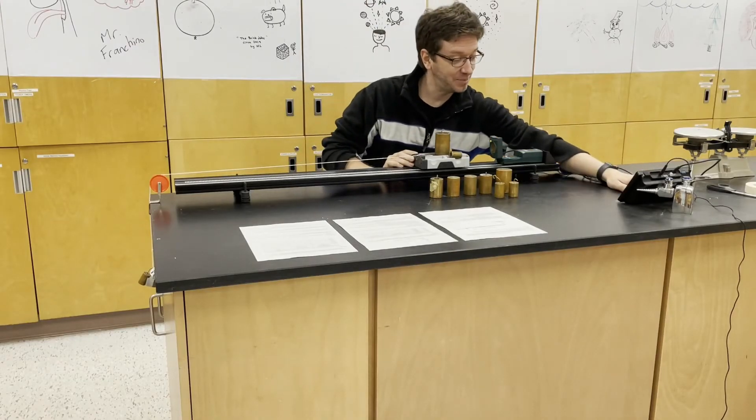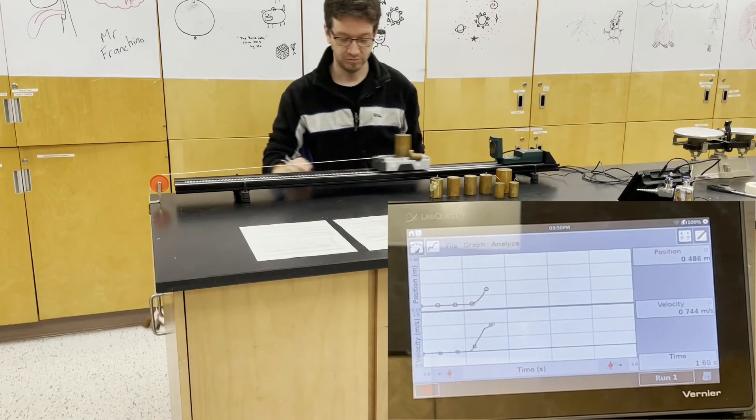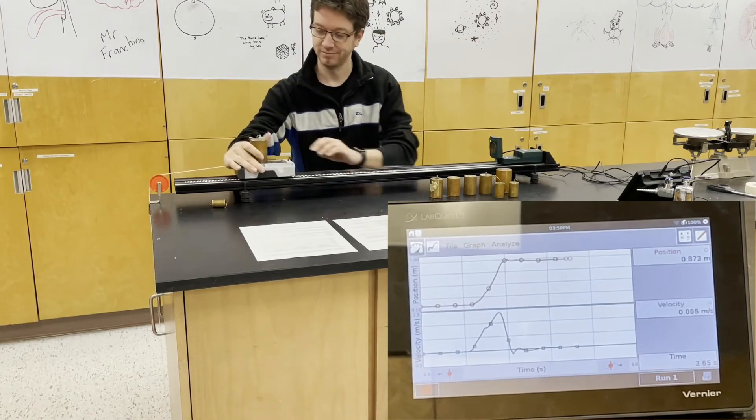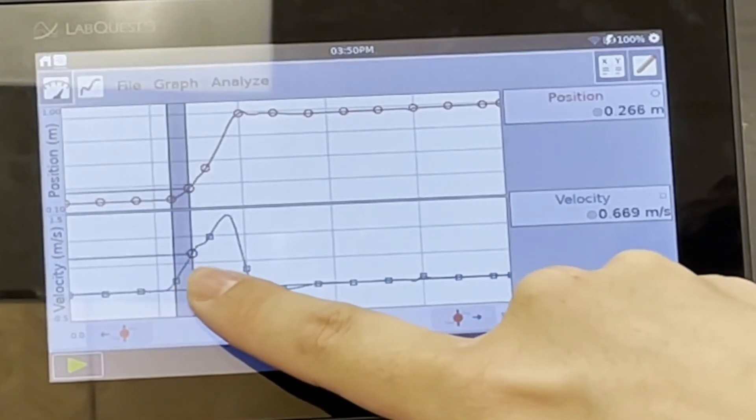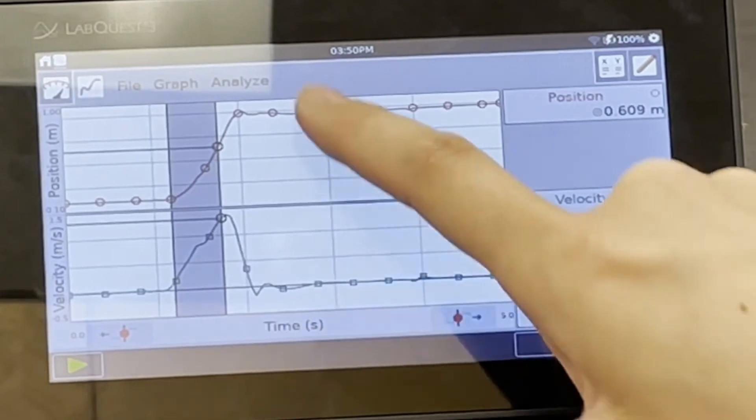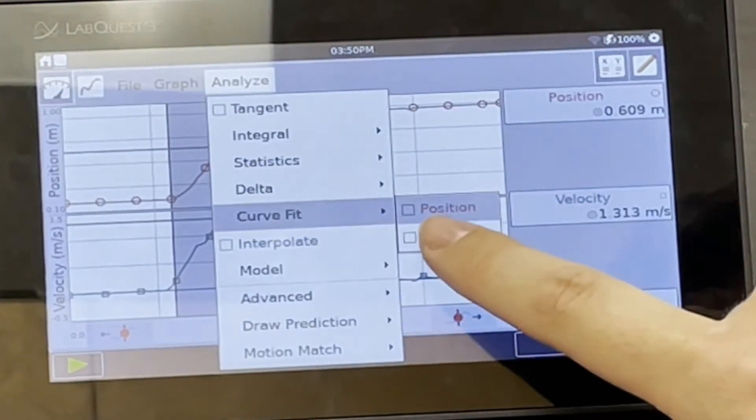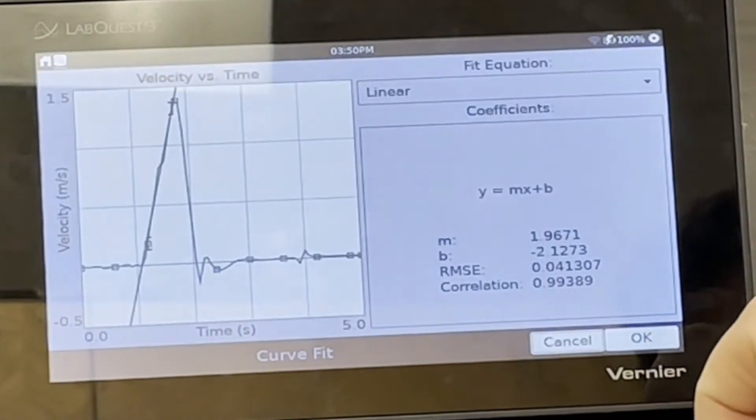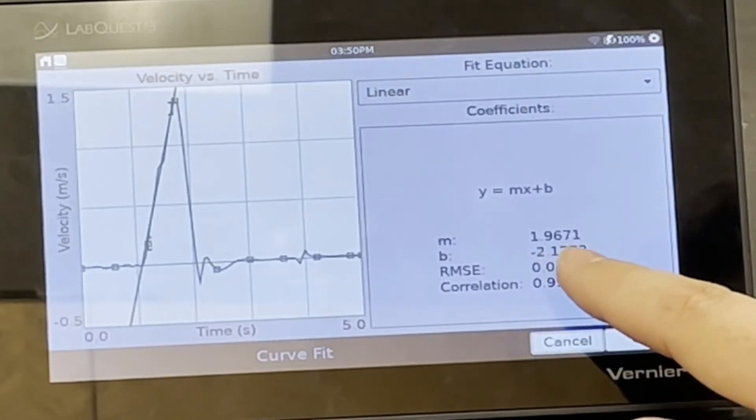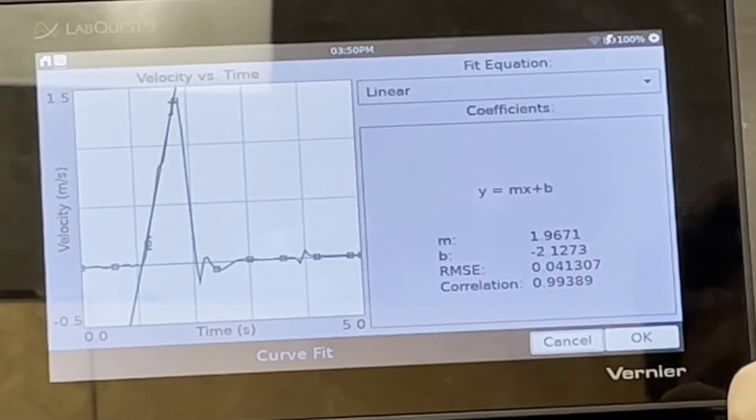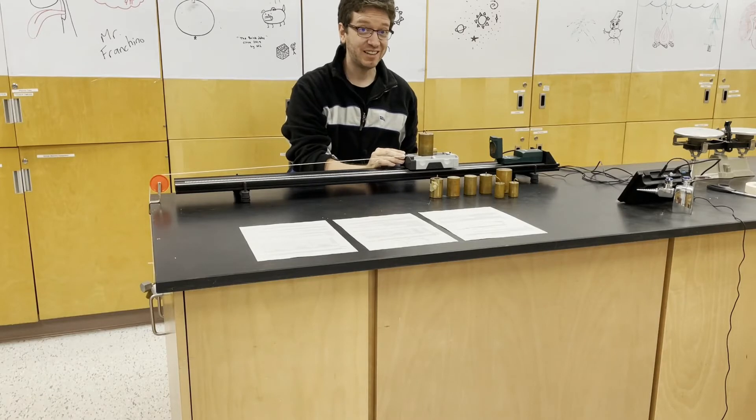Now 400 grams on the hanging mass. So now our acceleration is 1.9671 meters per second squared.